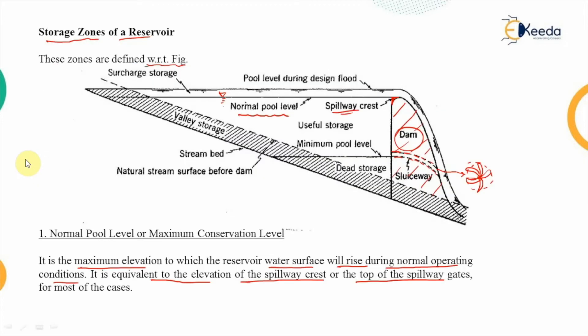The minimum pool level is also guided by the minimum head required for efficient functioning of the turbines. If the sluiceway is at the lowest outlet position, we must maintain the minimum pool level corresponding to that sluiceway, and that will dictate the head governing the functioning of the turbine placed across it.